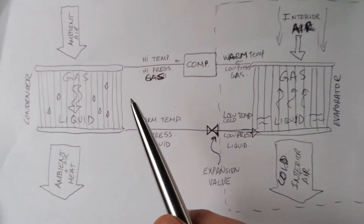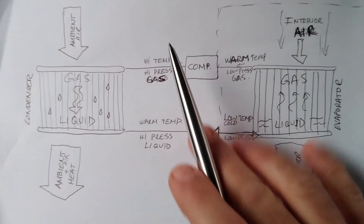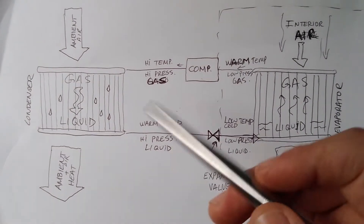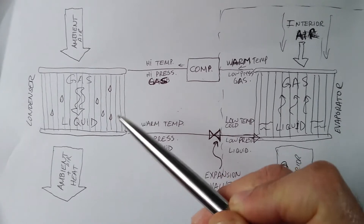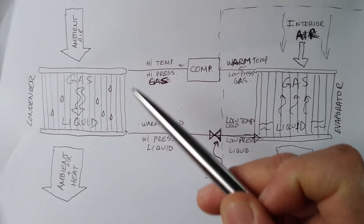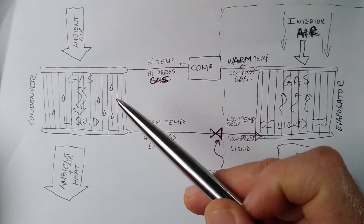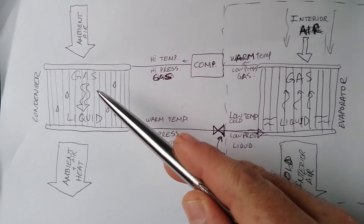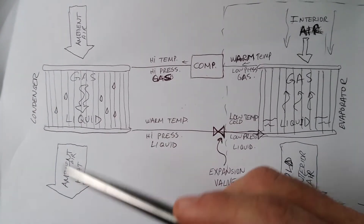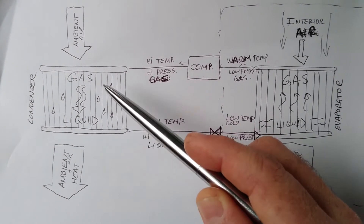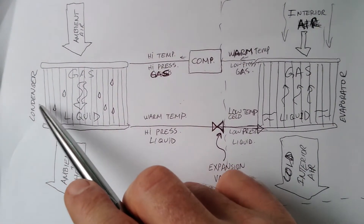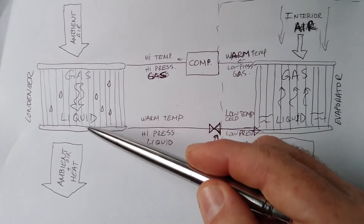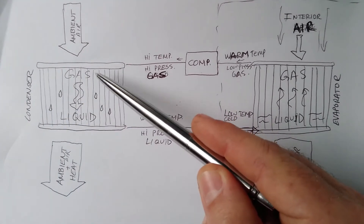This system works on the principle of latent heat — the fact that a gas, when it changes phase from gas to liquid, lets go of heat. If you start with a gas and remove enough heat from it, it will condense into a liquid. That is exactly the purpose of the condenser — to remove heat from the gas so it can condense, hence the name.